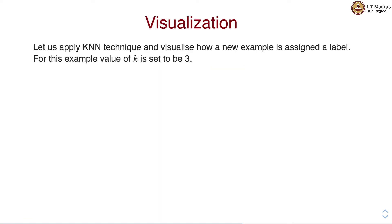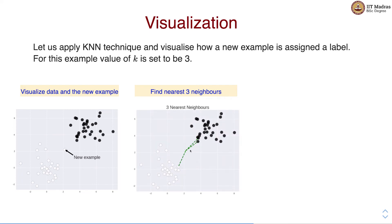Let us apply KNN technique and visualize how a new example is assigned a label. For this example value of K is set to 3. As a first step we visualize the training data and a new example. Here there are examples from two classes black and white, and this is where our new example is. As the next step we find three nearest neighbors for the new example using the chosen distance function. We label the new data point with majority class out of these three nearest neighbors, and you can see that the black class is in majority in the neighborhood of our example. Hence the new data point is labeled with class black.